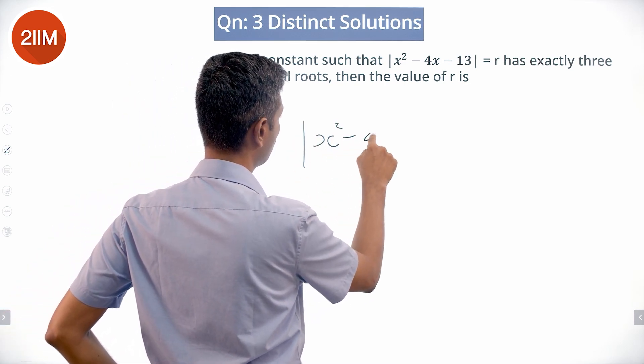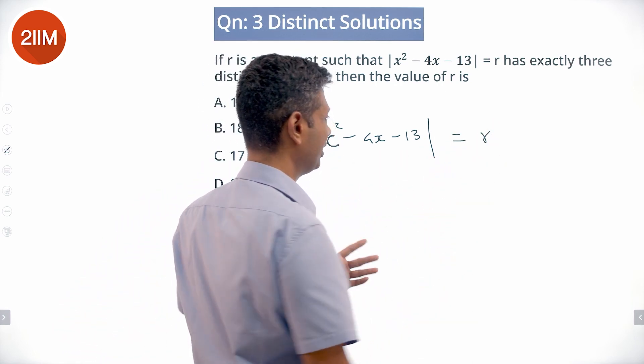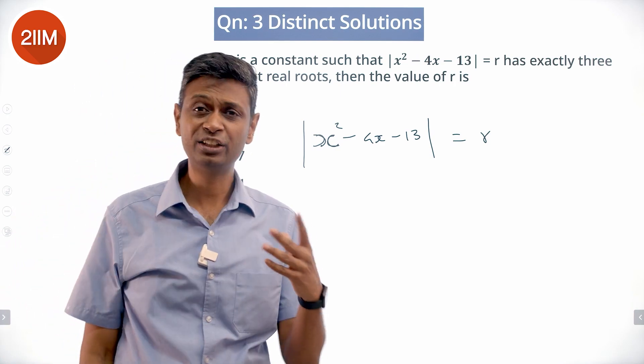So x² - 4x - 13. It looks like it cannot be factorized. It is not required that we factorize this. The idea is it has exactly three roots.